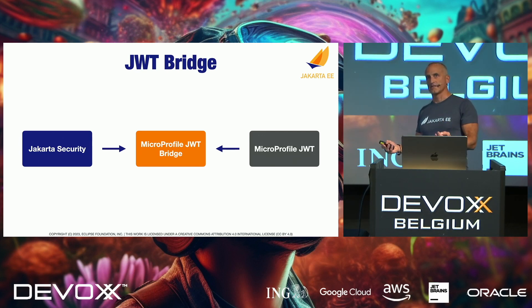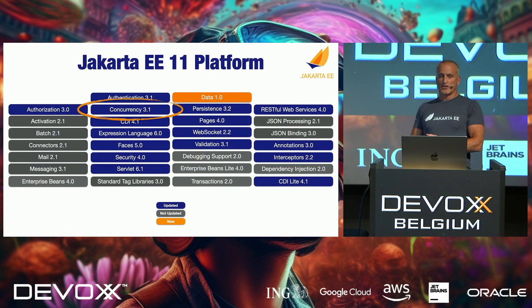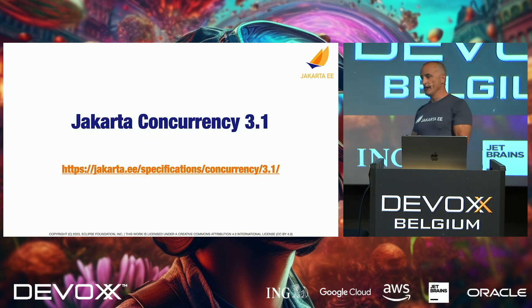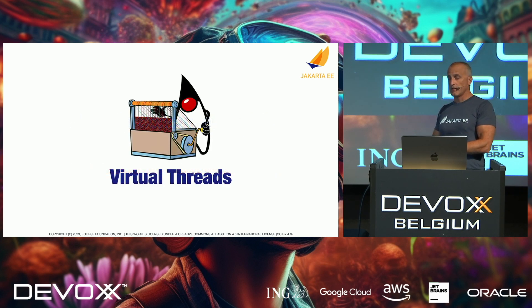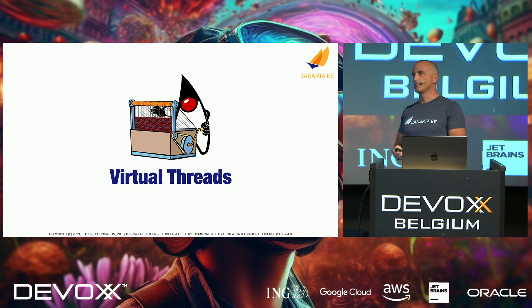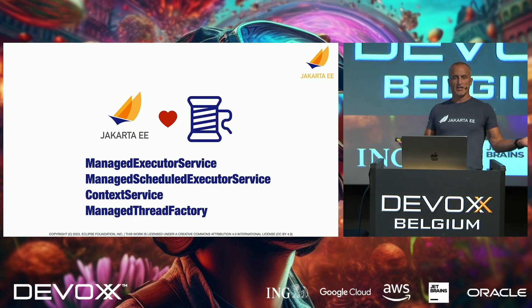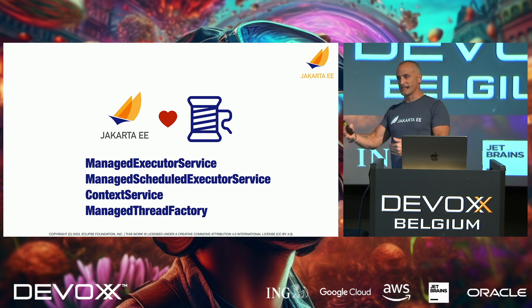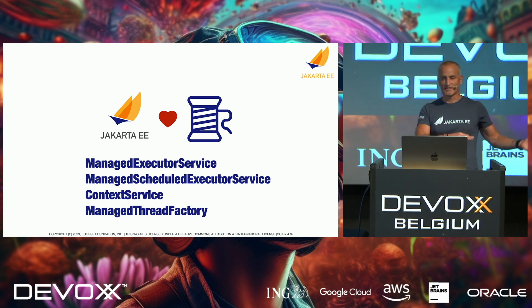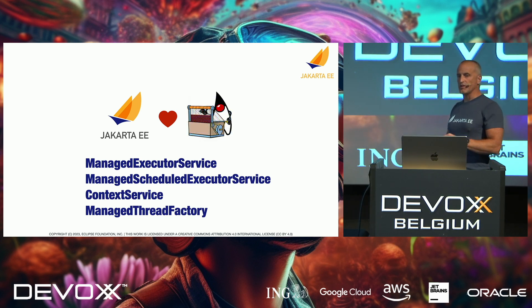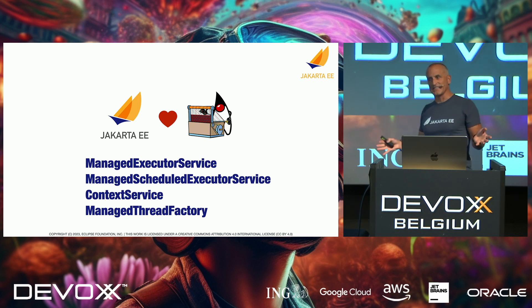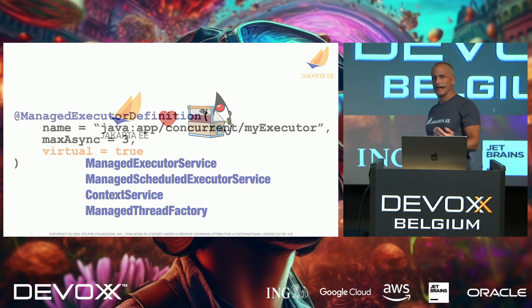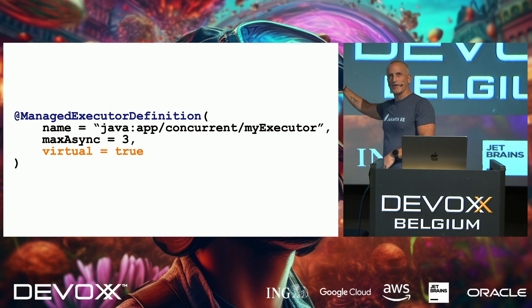For Concurrency, it's version 3.1, and the main theme is support for virtual threads, or Project Loom. In Jakarta EE we have a love-hate relationship with threads — we don't really use threads explicitly; we use managed threads, managed executor service, and managed everything. You should never create a thread yourself in Jakarta EE; you ask the container to handle it for you. So what we're doing is adding some sort of 'managed' wrapper around virtual threads where it makes sense. Something like adding a parameter 'virtual equals true' somewhere, and then you'll get the virtual thread.